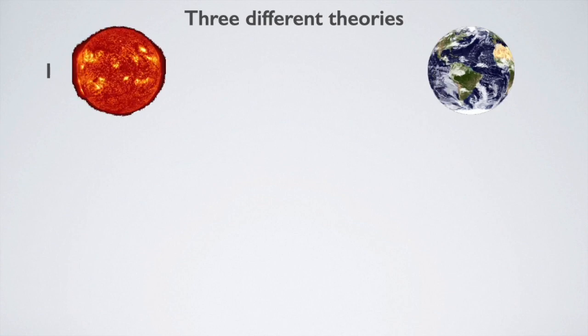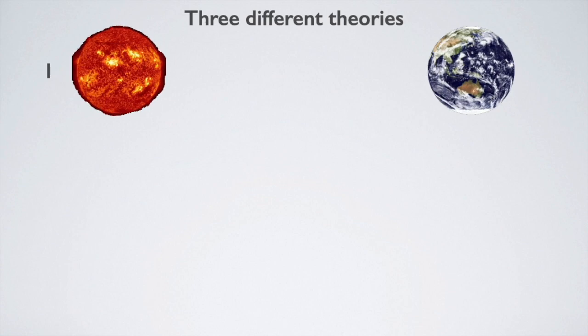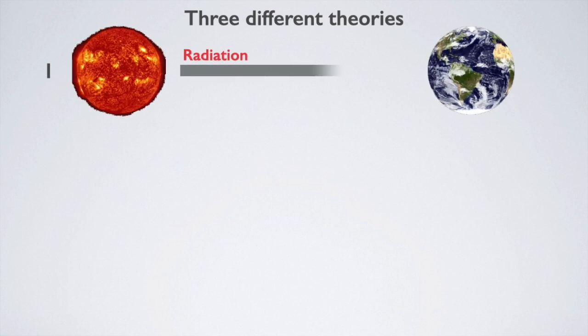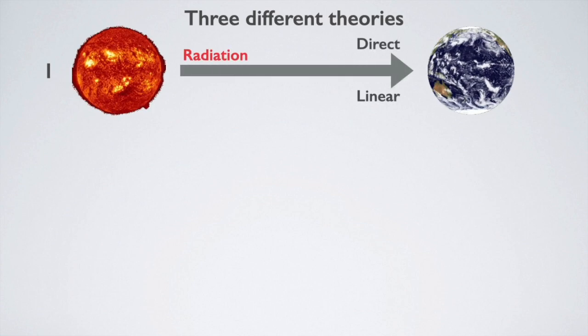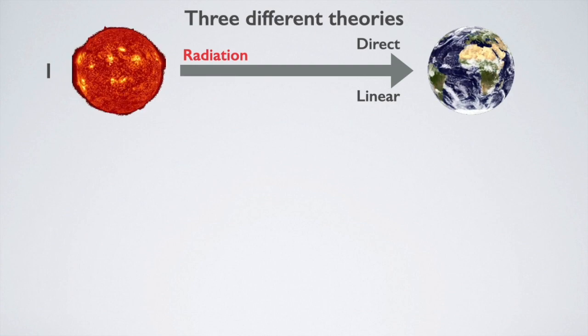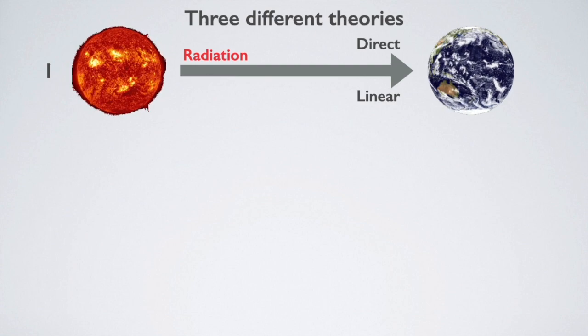But a few scientists, often attacked and obstructed, continue to try to explain the sun's effect on climate and have developed three different explanations. These three theories are not mutually exclusive. The fact that one is true does not mean that the others are false. The first theory is based on the direct effect on climate of changes in solar radiation. Because the effect is proportional to the cause, we say it is linear.